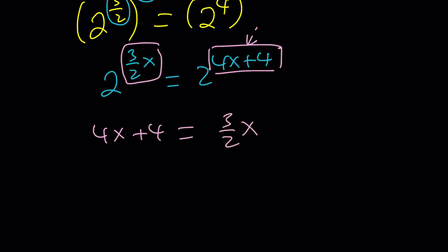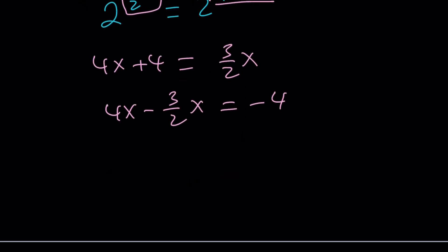Now, how do you solve for this problem? Subtract 3 halves of x from both sides. And then subtract 4, and you get a negative 4. Let's go ahead and make a common denominator or multiply everything by 2, which is better. Same thing.